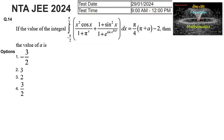If the value of the integral from −π/2 to +π/2 of [x² cos x / (1 + πˣ)] + [(1 + sin²x) / (1 + e^(sinx)^2023)] dx is equal to π/4 times (π + a − 2), then the value of a is?